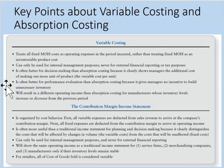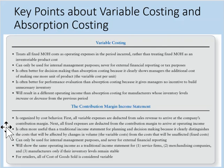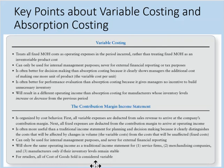Variable costing is often better for performance evaluation than absorption costing because it doesn't give managers an incentive to build unnecessary inventory. It will result in different operating income than absorption costing when inventory levels increase or decrease. The contribution margin income statement is organized by cost behavior — subtracting variable expenses from sales to arrive at contribution margin, then subtracting fixed expenses for operating income. It can only be used internally and shows the same operating income as a traditional income statement for service firms, merchandising companies, and manufacturers only if inventory levels remain stable. For retailers, cost of goods sold is considered a variable cost.